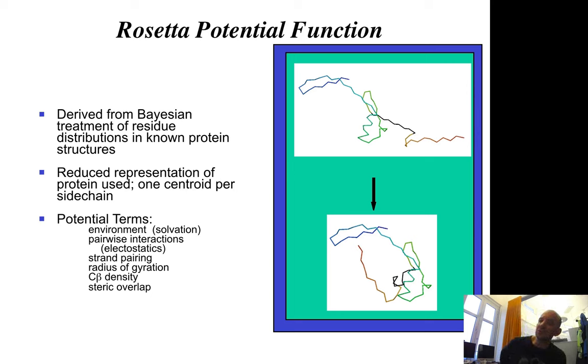Then you have a potential function that describes the probability that the structure is correct. It has a number of terms that are weighted in a Bayesian way. You can look at Bayesian statistics if you want to. It has a reduced representation of each protein, one centroid per side chain, and it has a number of terms: parallel interactions, hydrogen bonding between chains, etc. In Rosetta today there are hundreds of terms, and there is a weight that puts them all together. That has been optimized and tested many, many times on many proteins. Basically it's a Bayesian description of what is the probability to find this conformation in the native structure.